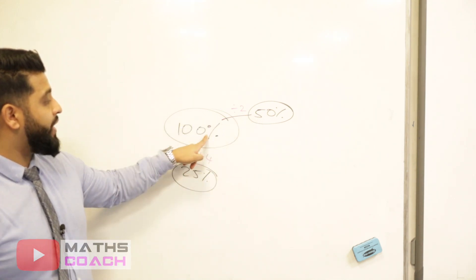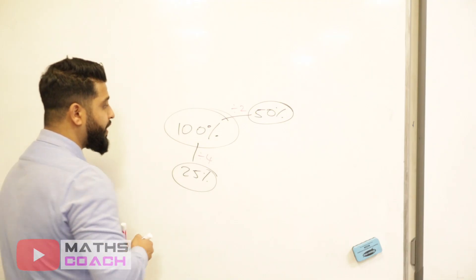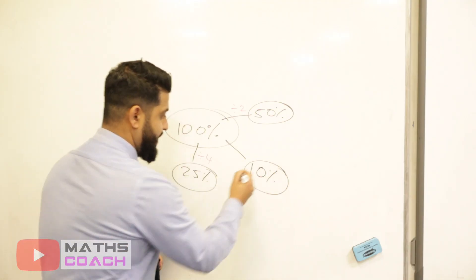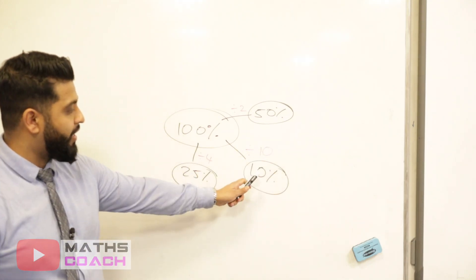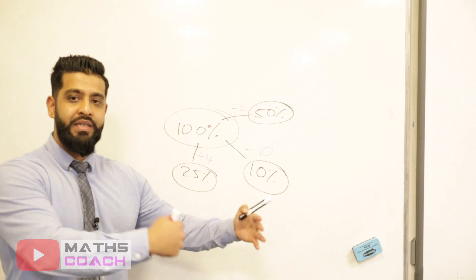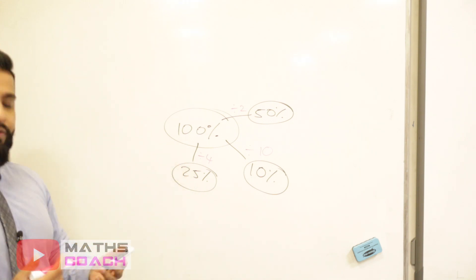To find 50%, we divide by two. To find 25%, we divide by four. What do you think you do when you want to find what 10% is? You divide by 10. Why? Because there are 10 parts of 10% in 100%.